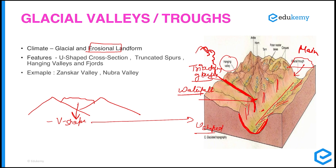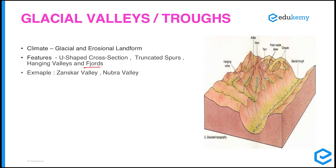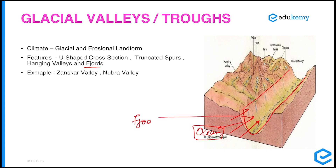Another feature associated with glacial troughs is fjords. If a glacial valley or trough is close to the ocean, seawater enters into the mainland area through the trough. This is called a fjord, and fjords are mostly seen in Ireland and other temperate regions.